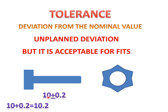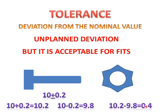If we add plus 0.2 to 10, we get a higher value of 10.2. If we subtract 0.2, we get the lower value. The higher value minus the lower value gives the tolerance value, which is 0.4. This is the tolerance value between the bolt and nut. If both come within this range, a fit will be made; if not, a fit will not be made. This is tolerance.